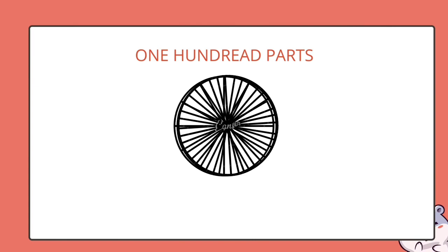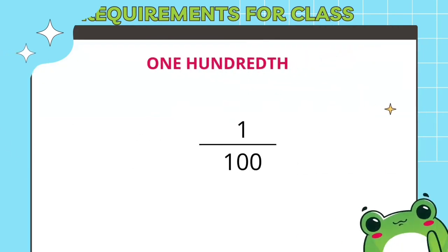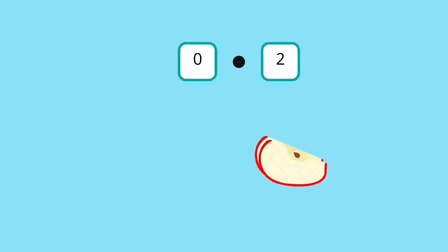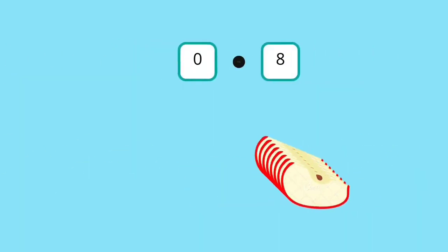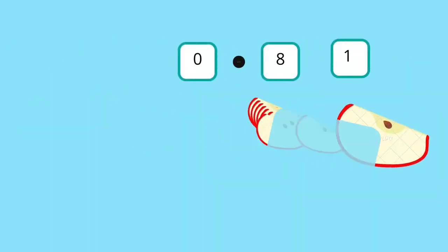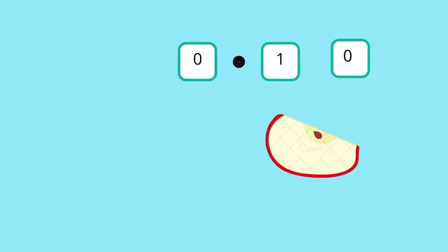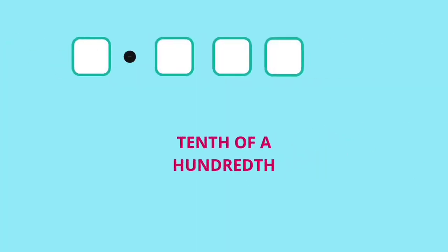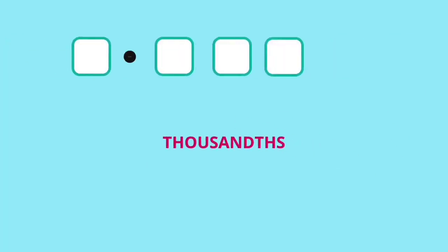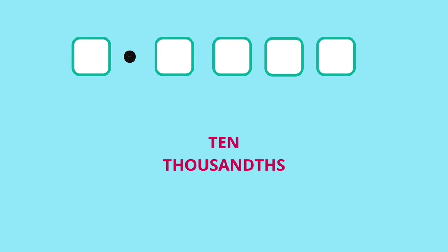One hundredth is the fraction you get if you take a tenth and divide it into ten equal parts. It's a very small fraction called a hundredth, because it's the same fraction you get if you take a whole apple and divide it into one hundred parts. Its fraction form is one over one hundred. Just like tenths represent amounts in between ones, hundredths represent amounts in between tenths. If you combine ten tenths they equal one, and if you combine ten hundredths they equal a tenth. The decimal number places keep going — the next place represents fractions that are one tenth of one hundredth, called one thousandth. Then comes the ten-thousandths place, the hundred-thousandths place, the millionths place, and so on.